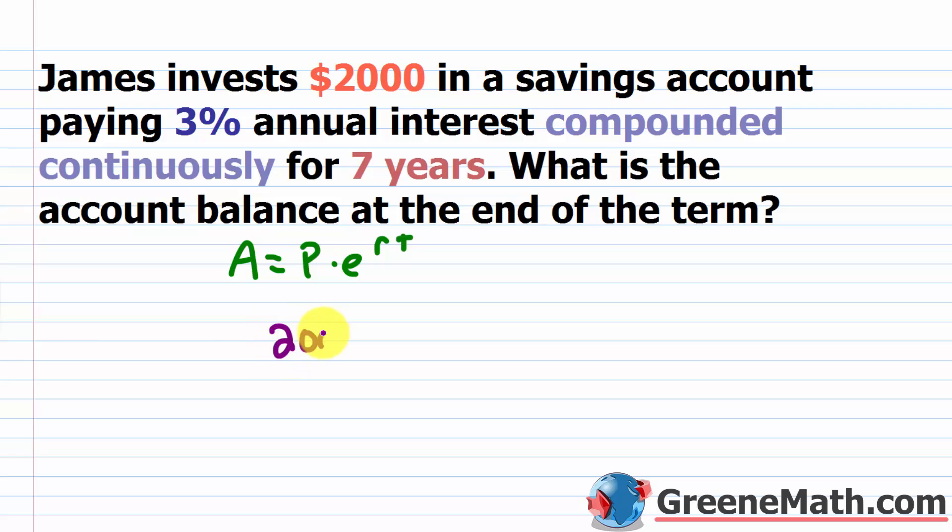Hopefully your teacher lets you write it down on a piece of scratch paper. But basically, you're just going to plug in. So for P, I have 2000, then times E raised to the power of R times T. In this case, the rate is 3%, so as a decimal it's 0.03, and then the time in years is seven, so it's times seven. So basically, 0.03 times seven, just think about 30 times seven, that's 21. You'd have two decimal places there, so it would be 0.21. And if you punch that up on a calculator, you're going to get approximately $2,467.36.